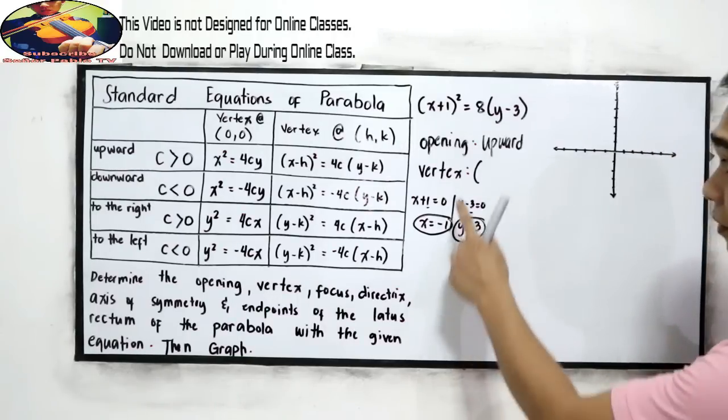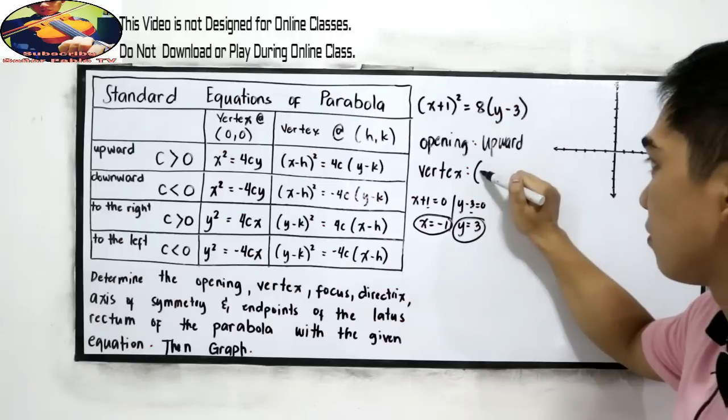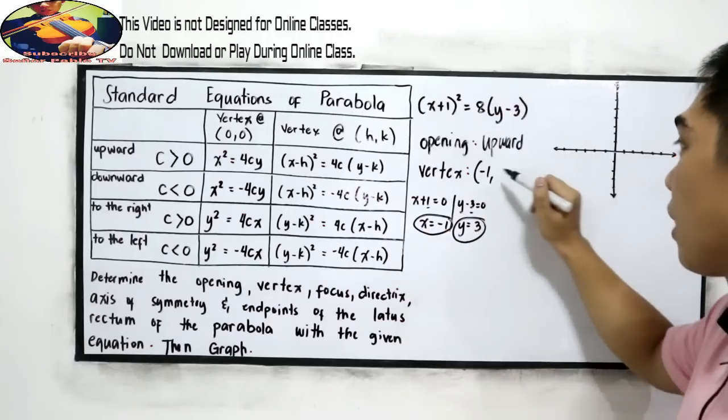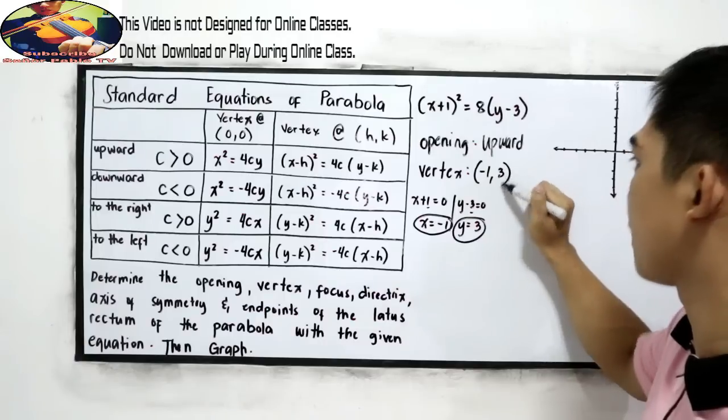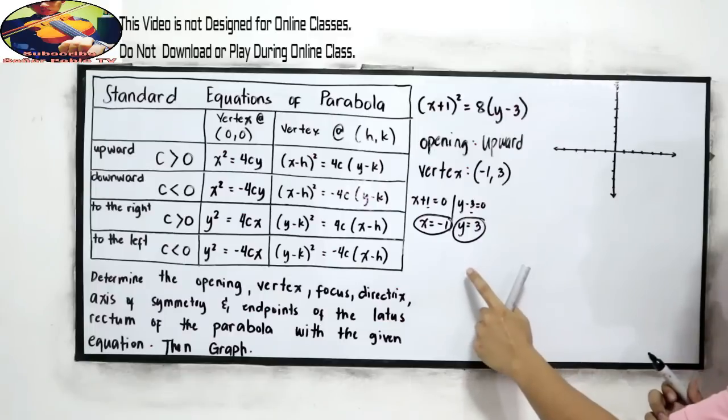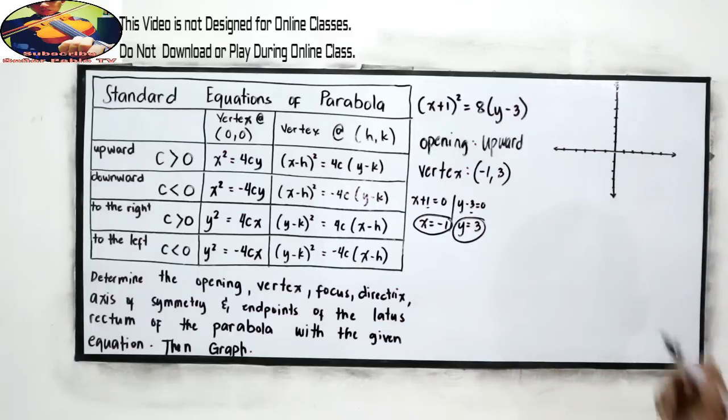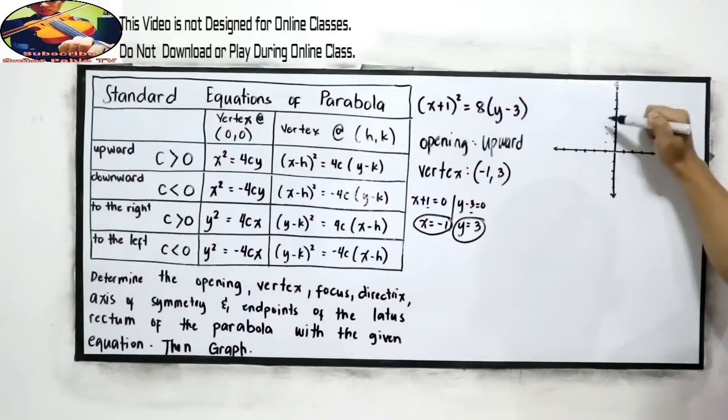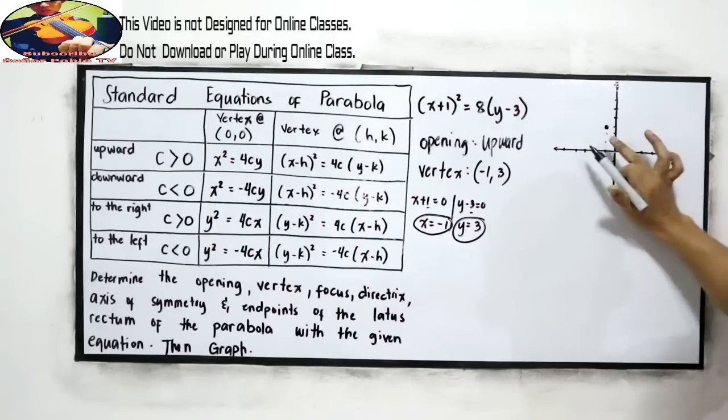Therefore, our vertex is -1 for our x coordinate, and for our y coordinate is positive 3. Negative 1, positive 3. Now let us locate negative 1, positive 3. So negative 1, positive 1, 2, 3. So it's here.